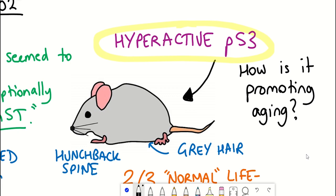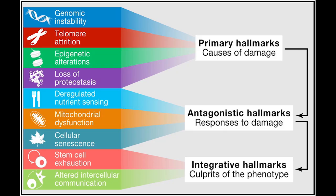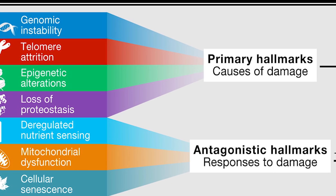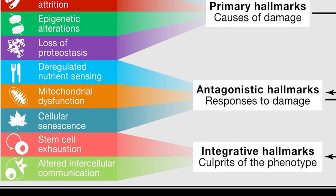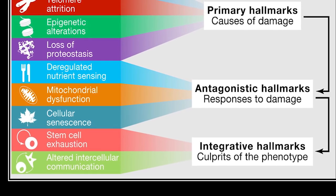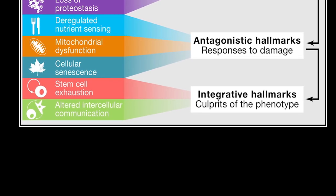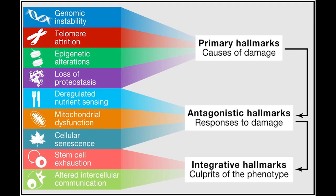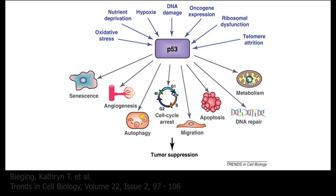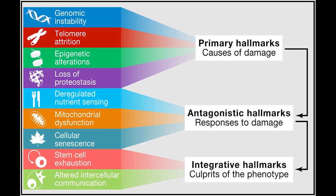So a good way to understand the aging process is through the different hallmarks of aging. And so there are nine different hallmarks of aging that can be split up into three different categories. The primary hallmarks, referred to as the causes of damage. Antagonistic hallmarks which are responses to damage and integrative hallmarks which are culprits of the phenotype. And so given that P53 is activated by different causes of damage it's interesting to look at the antagonistic hallmarks and the integrative hallmarks.